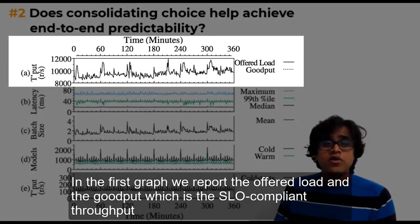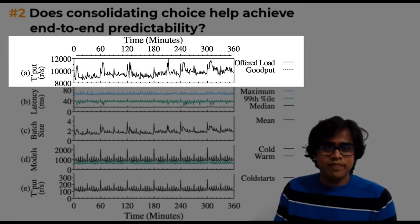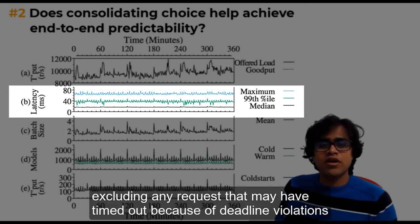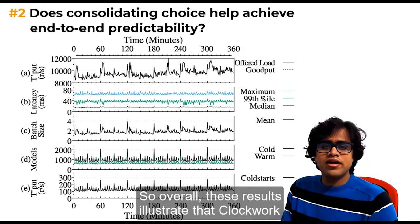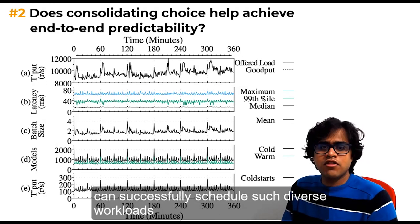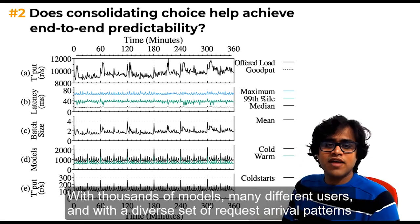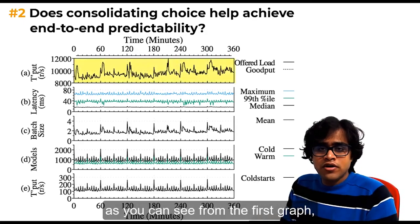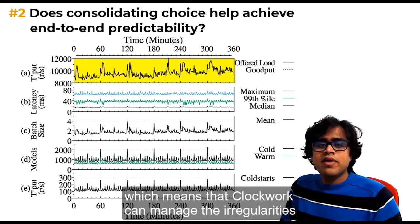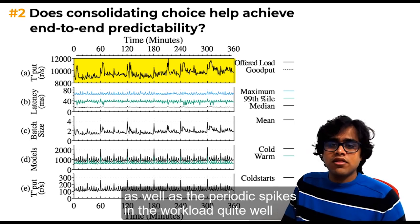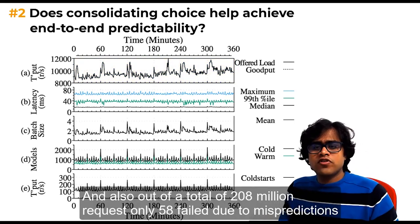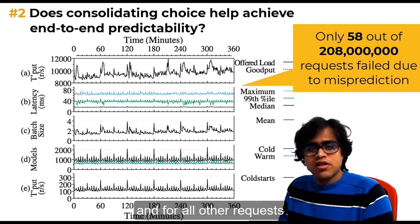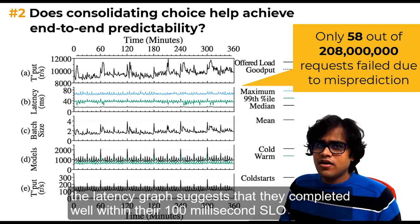To evaluate if consolidating choice helps achieve end-to-end predictability, we once again ran the Azure workload trace for 6 hours. The cumulative request workload was around 10,000 requests per second with periodic spikes around 12,000 requests per second. We configured each request with an SLO of 100ms for this experiment. In the first graph, we report the offered load and the goodput, which is the SLO compliant throughput. In the second graph, we report the latency of all completed requests, excluding any requests that may have timed out because of deadline violation. So overall these results illustrate that Clockwork can successfully schedule such diverse workloads with thousands of models, many different users, and with a diverse set of request arrival patterns. We see this because the goodput is almost identical to the offered load, as you can see from the first graph, which means that Clockwork can manage the irregularities as well as the periodic spikes in the workload quite well. And also out of a total of 208 million requests, only 58 failed due to misprediction. And for all other requests, the latency graphs suggest that they completed well within their 100ms SLO.